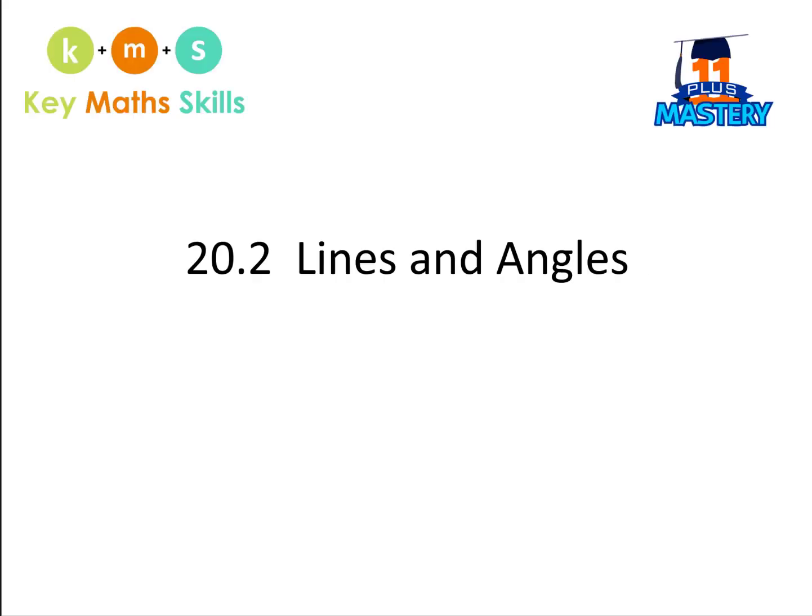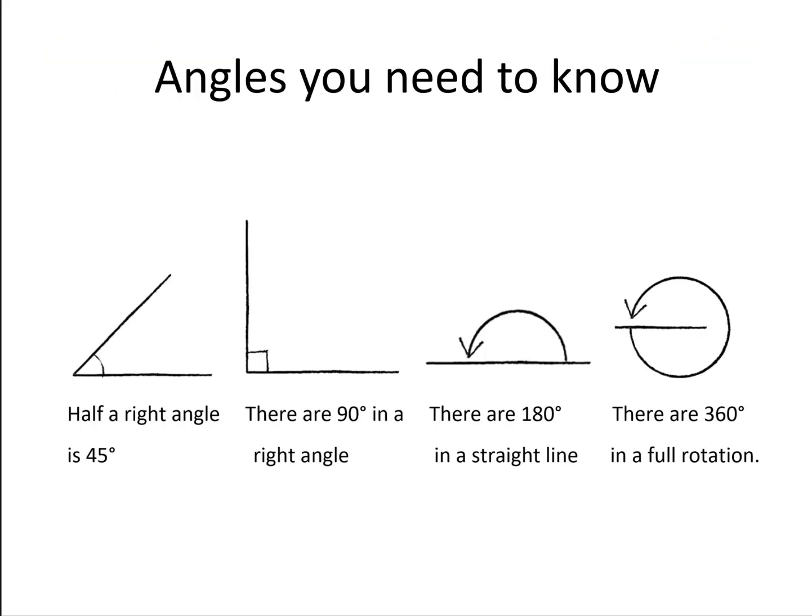Section 2: Lines and Angles. Quickly, let's recap the angles you need to know. You need to know 45 degrees is half a right angle, there are 90 degrees in a right angle, 180 degrees in a straight line, and you need to know 360 degrees in a full rotation.